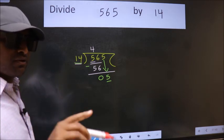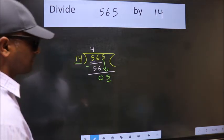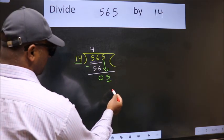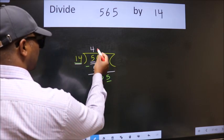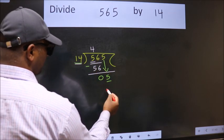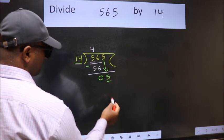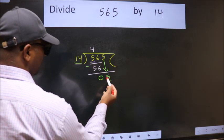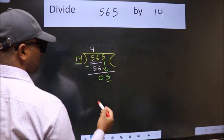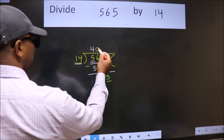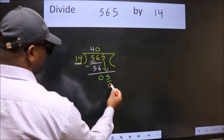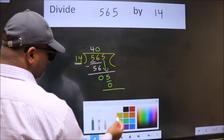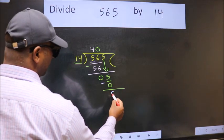Instead of that, what we should think of doing is which number should we take here. If I take 1, we will get 14, but 14 is larger than 5. So what we do is we take 0 here. So 14 into 0, 0. Now we subtract, we get 5.